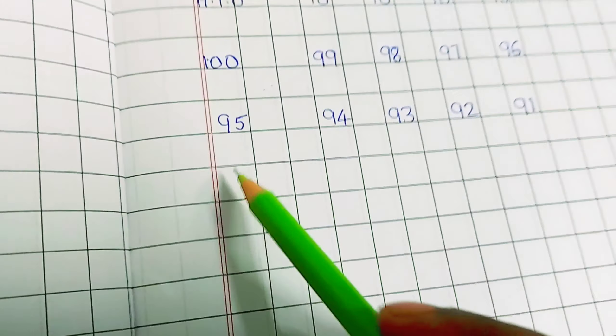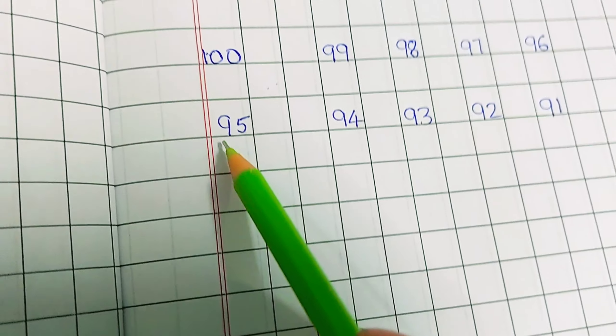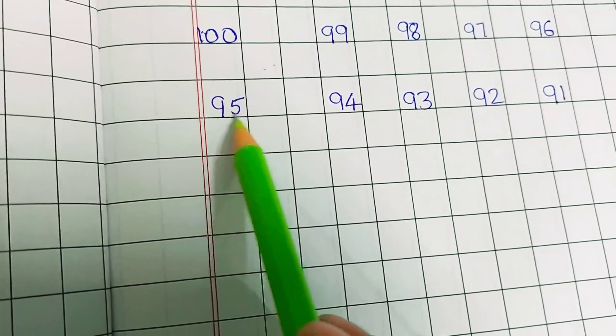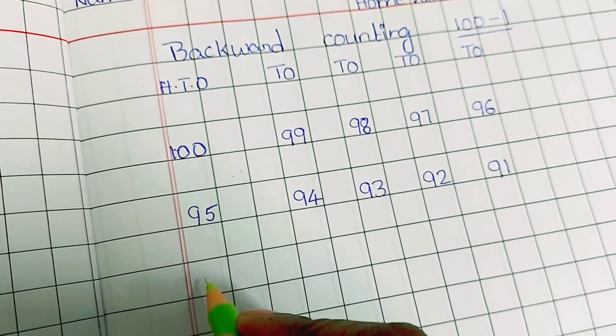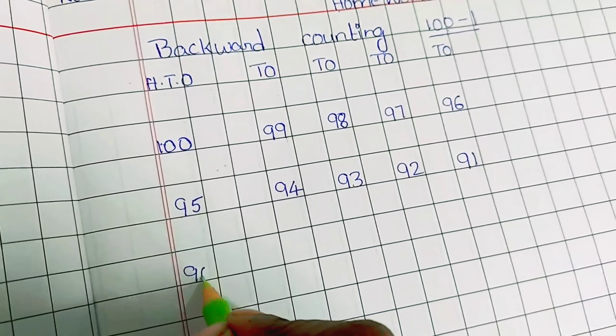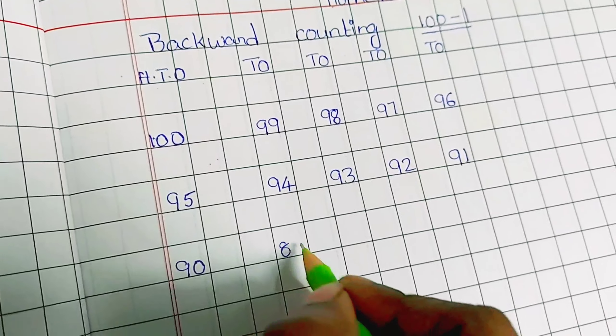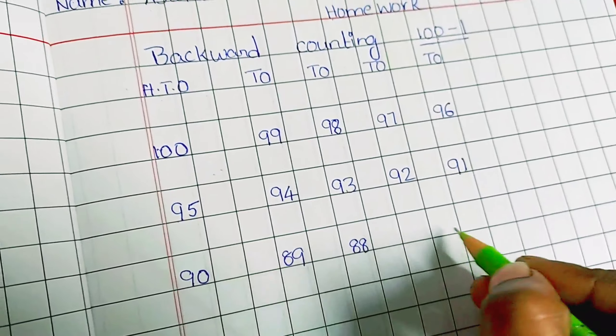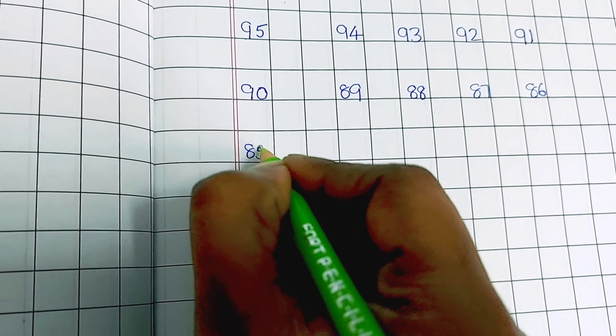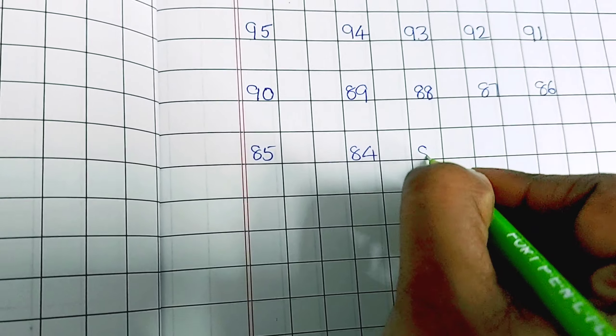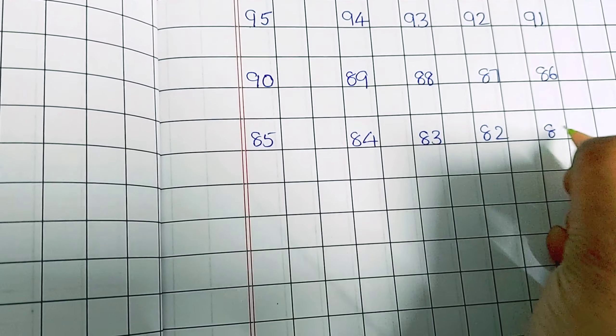While writing children numbers, they should follow the line. Means the line will touch the lower line. This is very important. Next, 91 of before, 90, 89, 88, 87, 86. Next, 85, 84, 83, 82, 81.